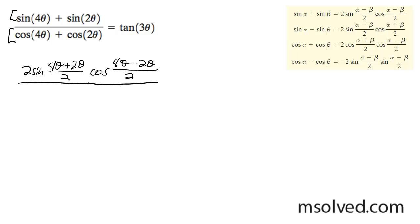Then for our denominator, we're going to use the third equation in our bank there. So it's going to be 2 cosine 4 theta plus 2 theta by 2 times cosine 4 theta minus 2 theta by 2.